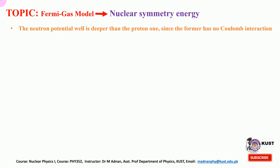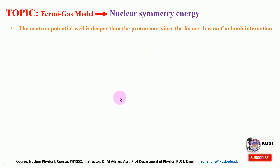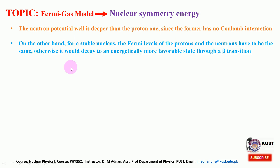The Fermi gas model shows that the neutron potential well is deeper than the proton one, since the neutron has no Coulomb interaction. In lecture number 22 we discussed these aspects — the two wells are slightly different in depth. Because the Coulombic force is repulsive between protons, the depth of the potential for the proton-proton interaction is somewhat less deep than for neutron-neutron. Also, for a stable nucleus the Fermi levels of the proton and neutron must be the same, otherwise it would decay to an energetically more favorable state through beta transition.